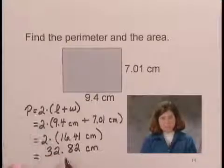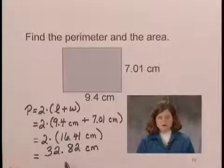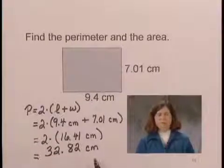This is P, or the perimeter, of the rectangle. And notice the units are centimeters.